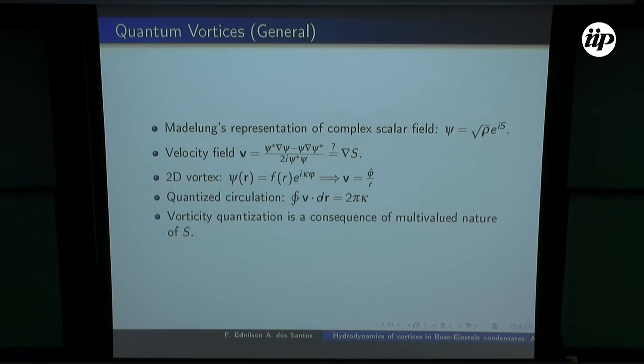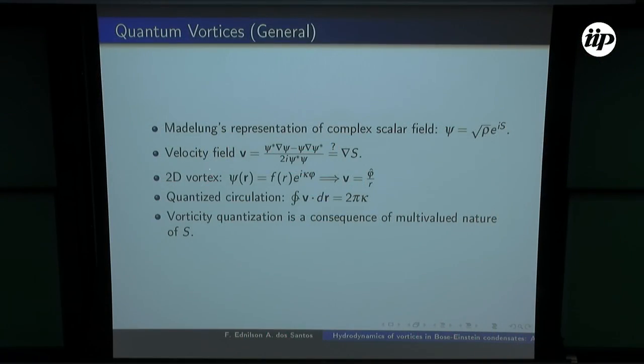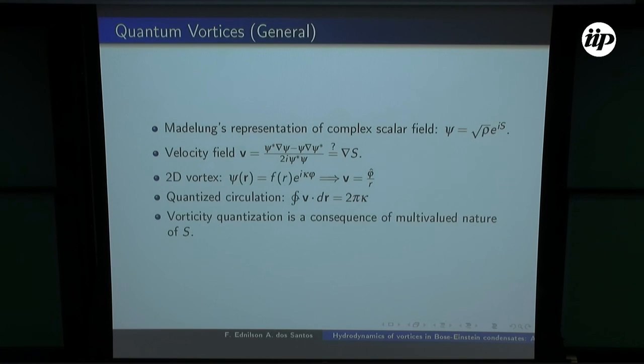The main idea to derive hydrodynamic equations is to use the so-called Madelung representation, where we separate the amplitude of the condensate field from its phase. We then associate the superfluid velocity field with the gradient of the phase. That's correct when we don't have vortices, but it's not correct when we do have vortices — and that's the problem we need to fix in order to get an equivalent to the Navier-Stokes equation.